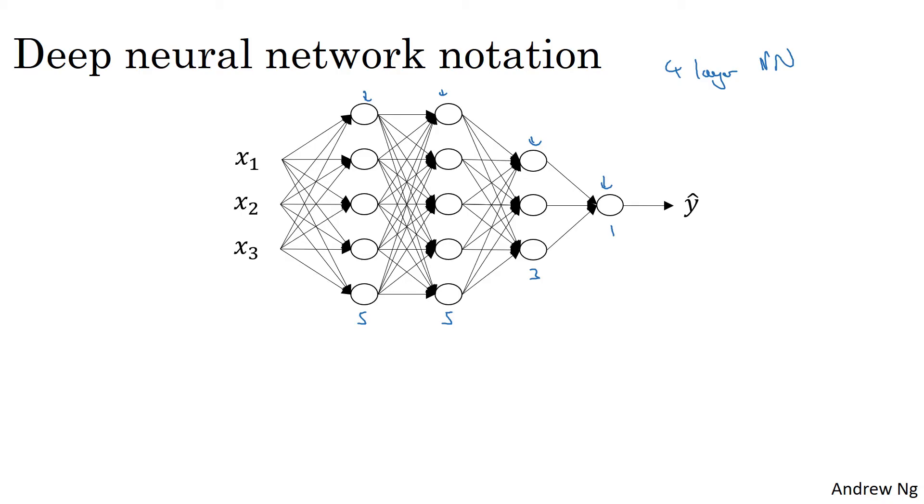So the notation we're going to use is we're going to use capital L to denote the number of layers in the network. So in this case L is equal to four. And we're going to use N superscript L to denote the number of nodes or the number of units in layer lowercase L. If we index the input as layer zero, this is layer one, this is layer two, this is layer three, and this is layer four.